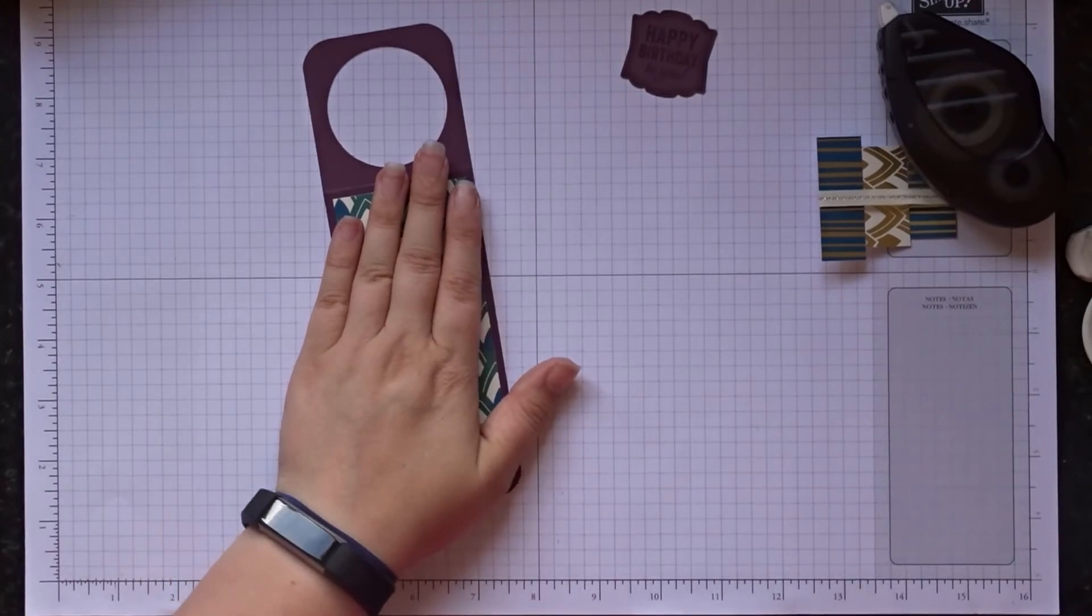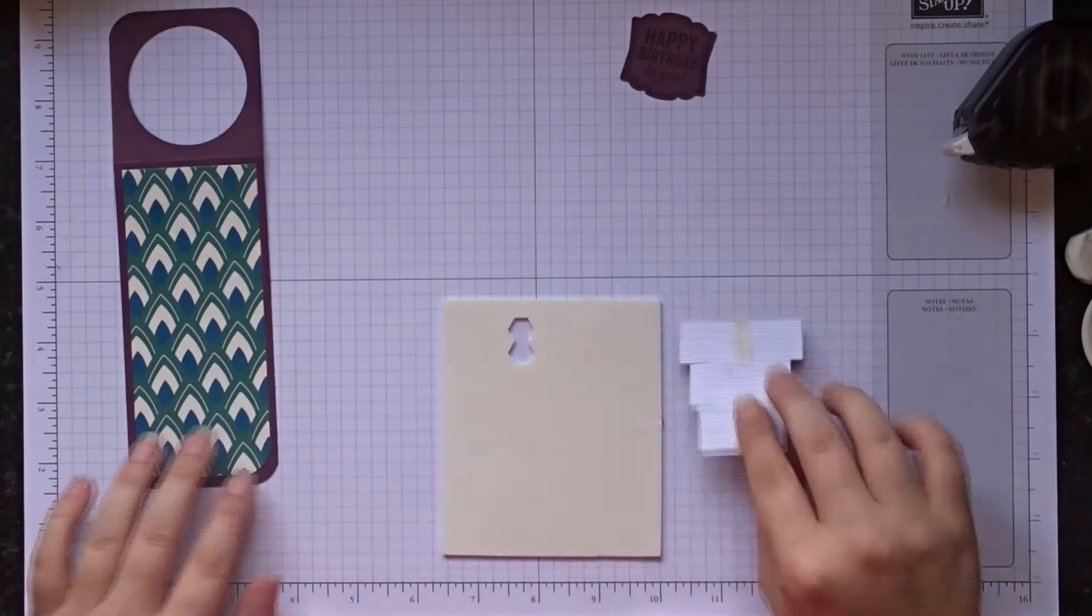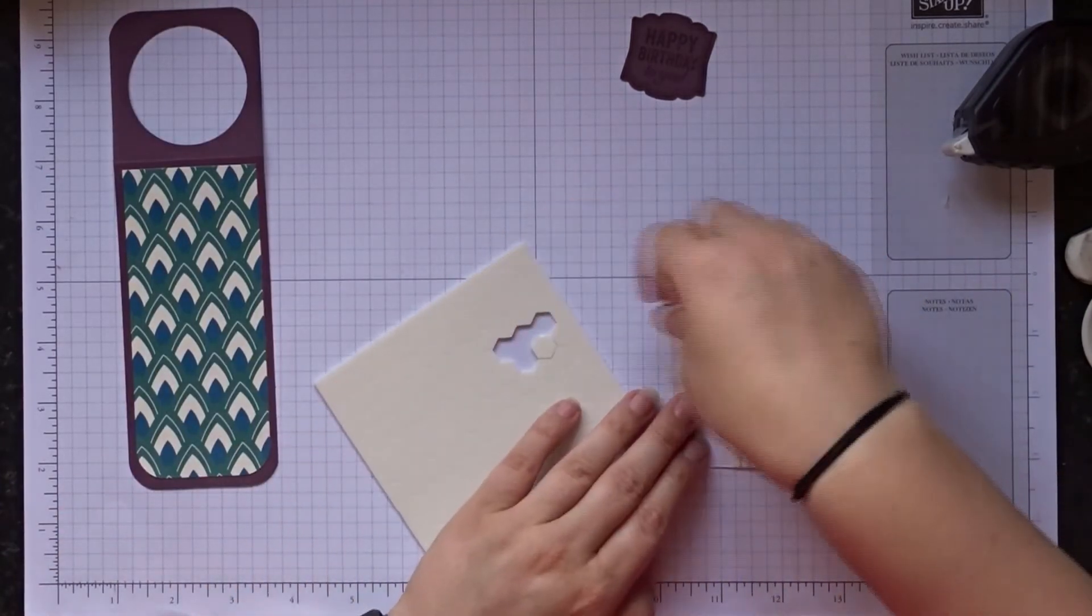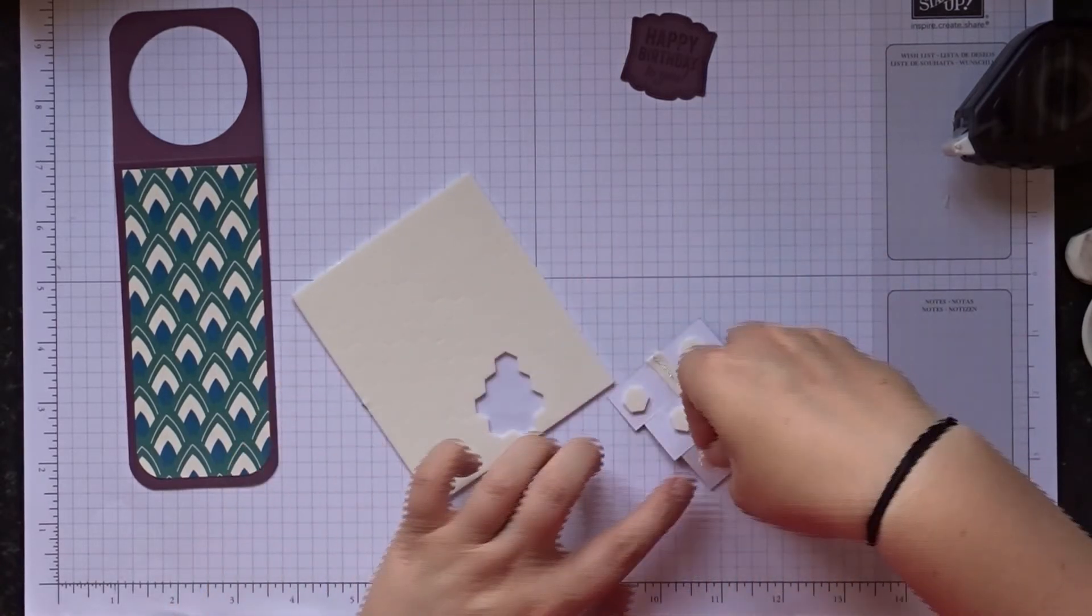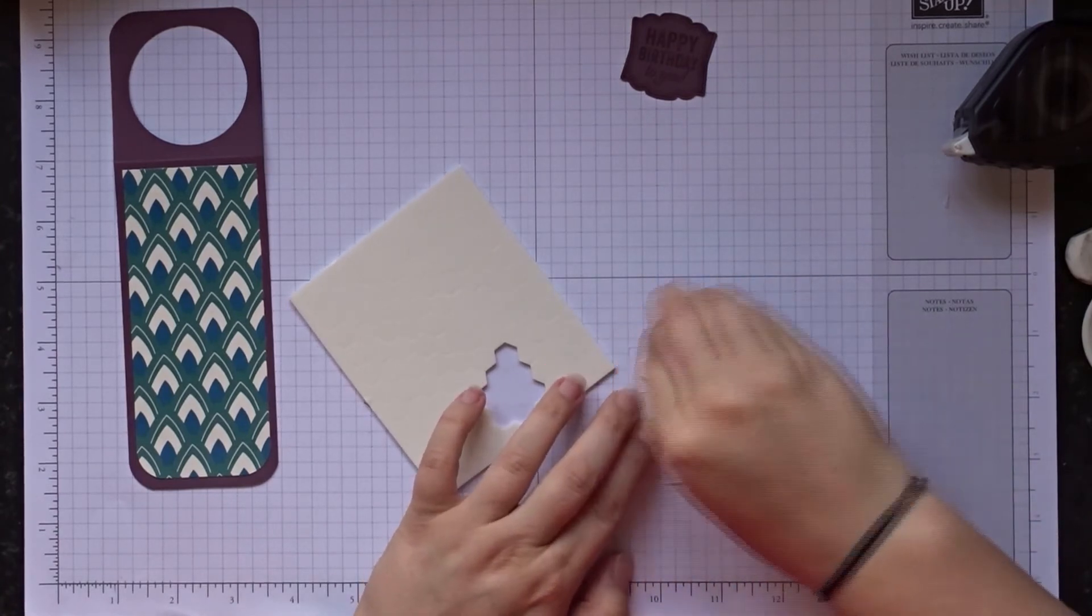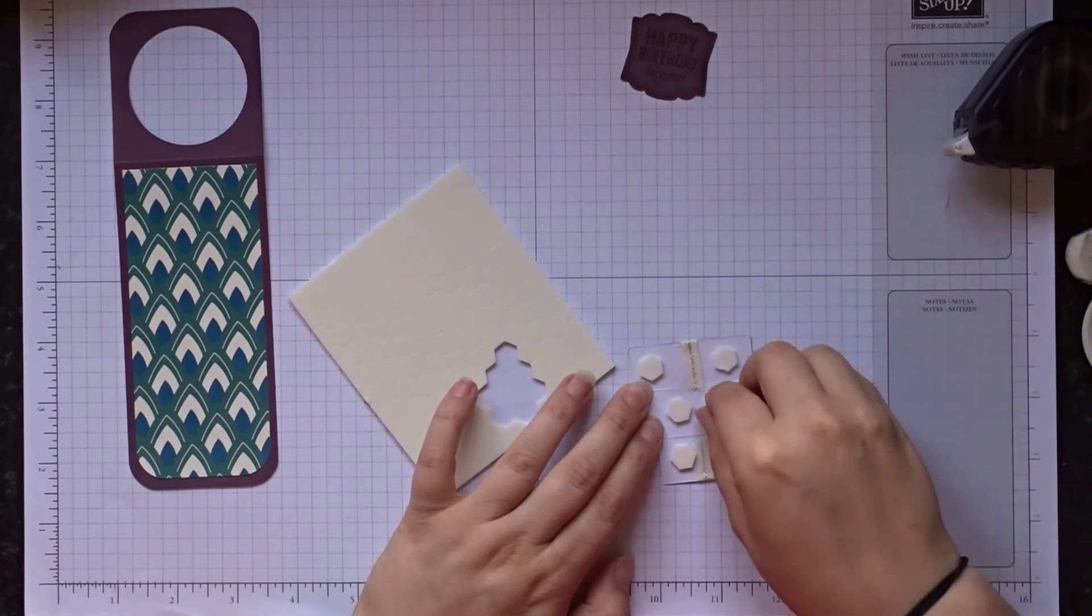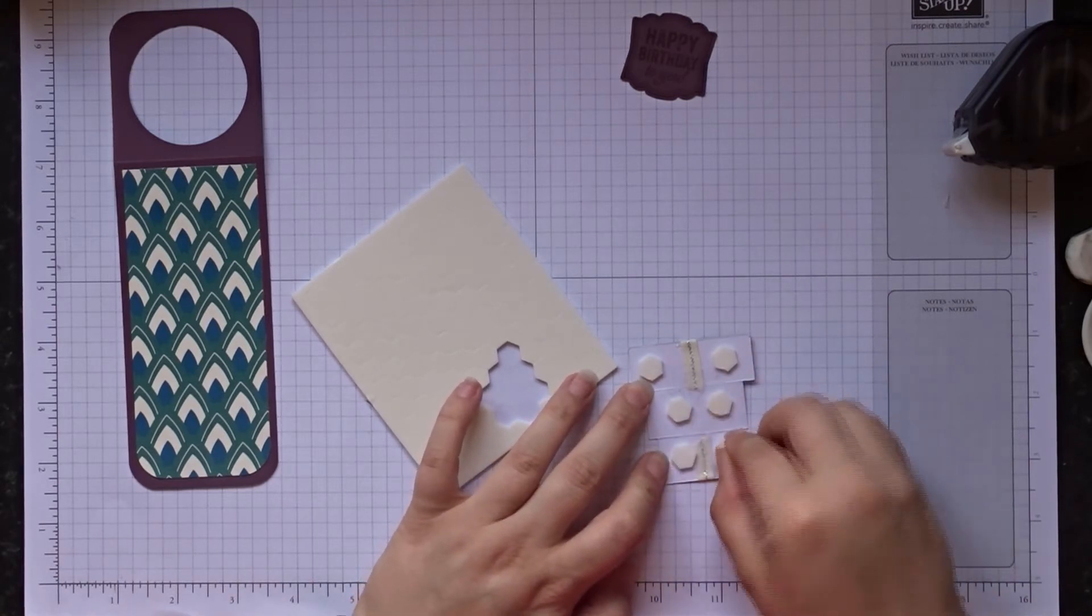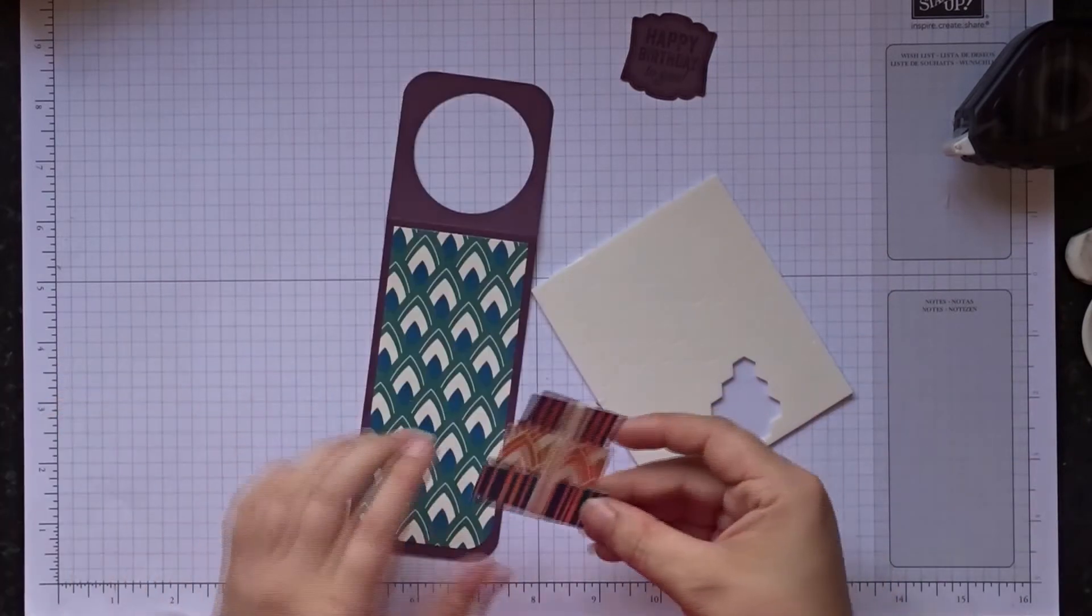I'm then going to get my dimensionals and I think we'll put the cake on first. So a couple of dimensionals on each cake or each section. Just to make sure it's going to hold in place. I'm really excited about the mini dimensionals that have just been released. I've got those on order. Sometimes you do just need that smaller one and you end up cutting them in half and just faffing. So it'll be a lot easier once we've got these mini ones.